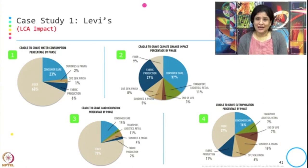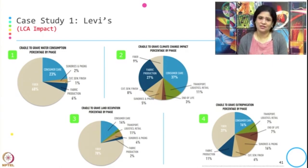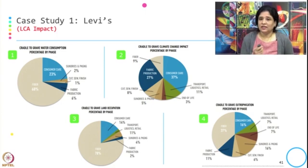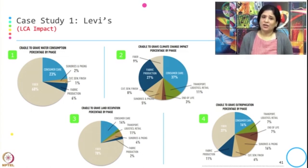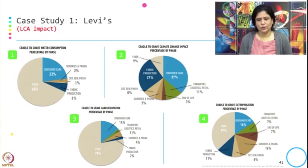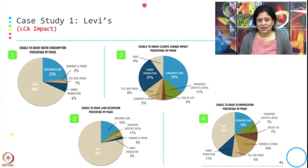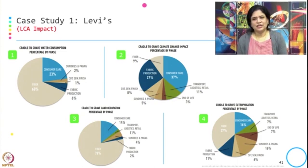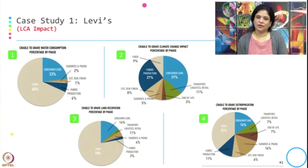Coming to the climate change impact, the maximum impact is from consumer care at 37%, fiber is 9%, and fabric production is 27%. For land occupation by phase, fiber is again maximum, followed by consumer care, and fabric production is just 2%. For eutrophication by phase, fiber contributes 37%, consumer care 16%, fabric production 11%.